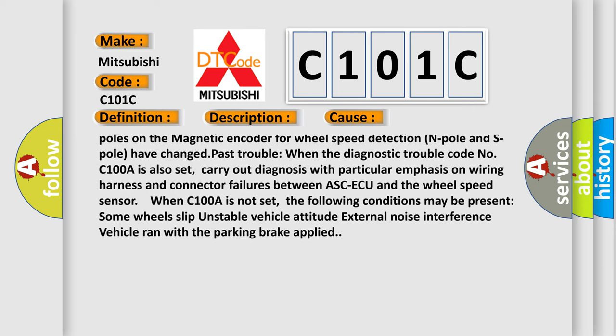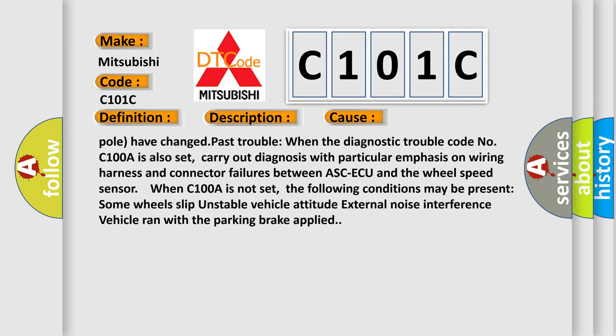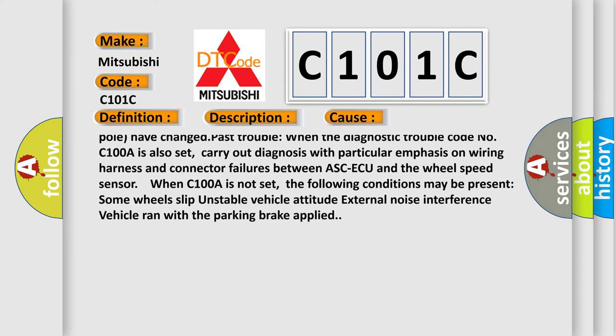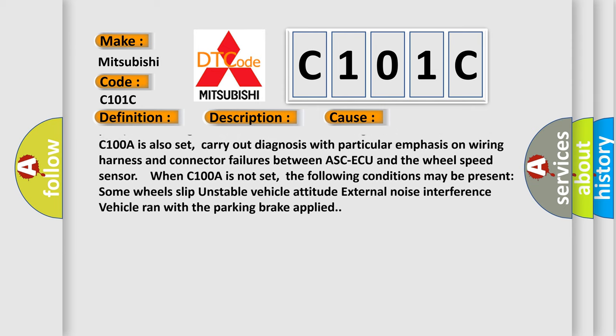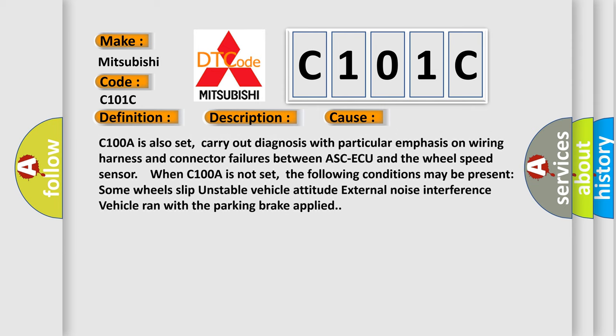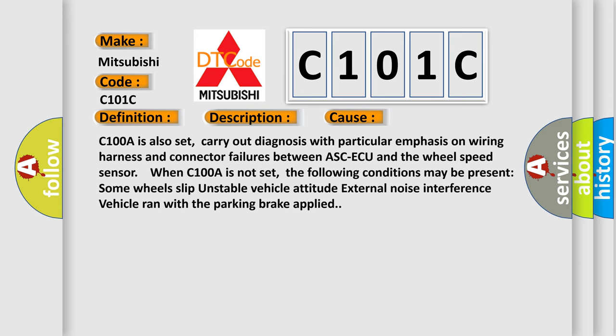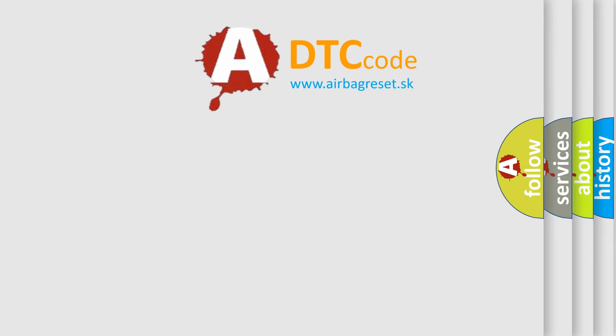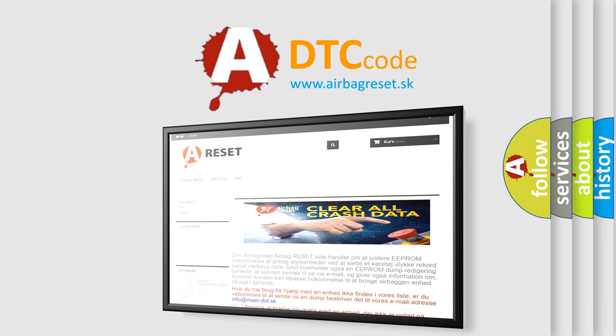Carry out diagnosis with particular emphasis on wiring harness and connector failures between ASC-ECU and the wheel speed sensor. When C100A is not set, the following conditions may be present: Some wheels slip, unstable vehicle attitude, external noise interference, vehicle ran with the parking brake applied. The Airbag Reset website aims to provide information in 52 languages. Thank you for your attention and stay tuned for the next video.